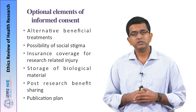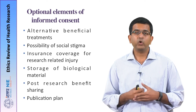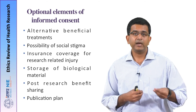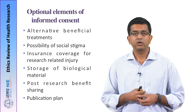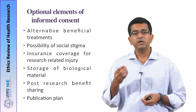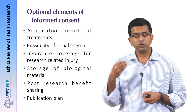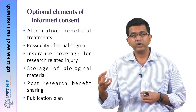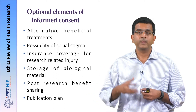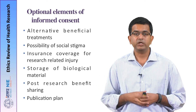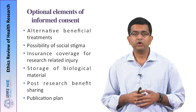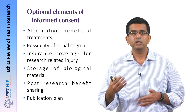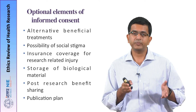The informed consent document should also mention details of post-research benefit sharing and how information will be disseminated. If it is a genetic study or involves collection of human specimens used for commercial purposes, how the profit or benefit will be shared with the originator of the specimen must be mentioned. There should also be a clear mention of whether there is a publication plan for the study findings in journals. These are all optional elements.